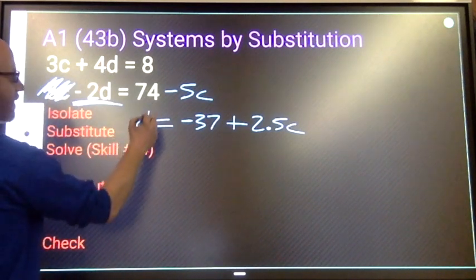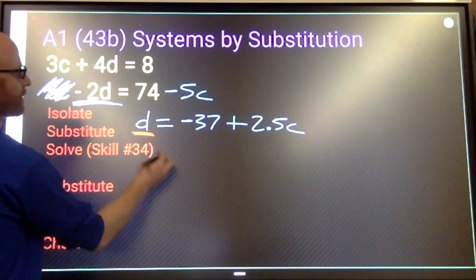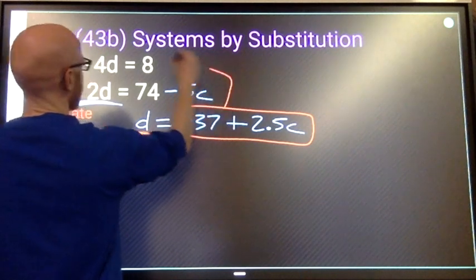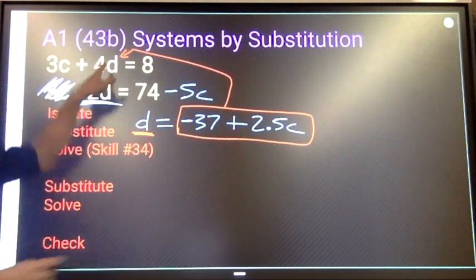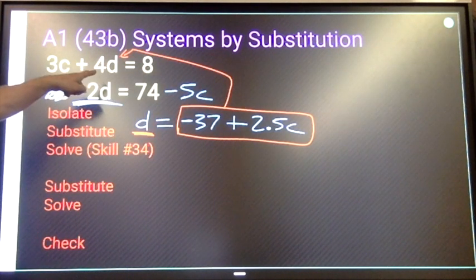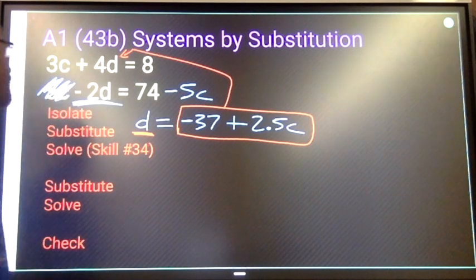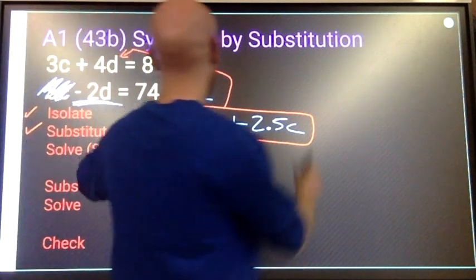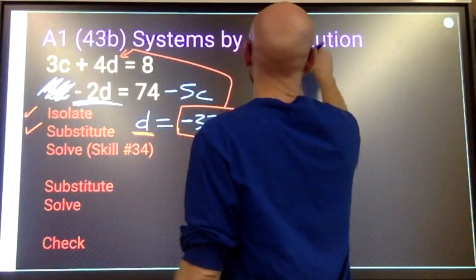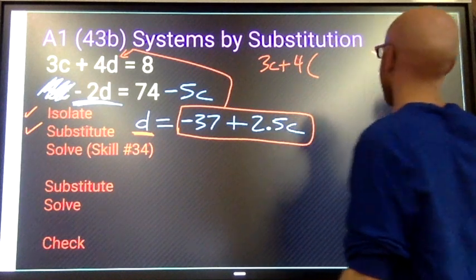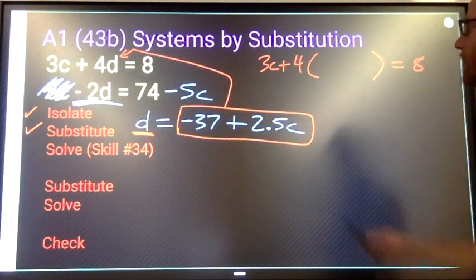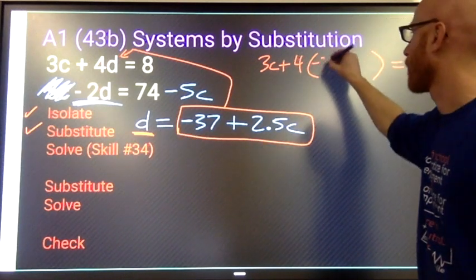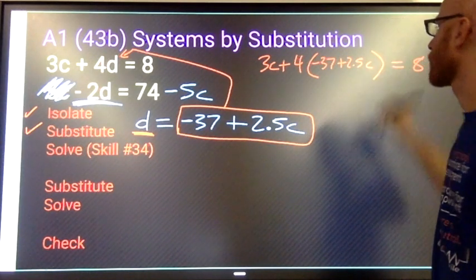Now I'm going to take this value and replace d up there. Here we go. Isolated. Now we're substituting. 3 times c plus 4 times d equals 8. Instead of writing d, I'm going to write negative 37 plus 2.5c. Distribute.